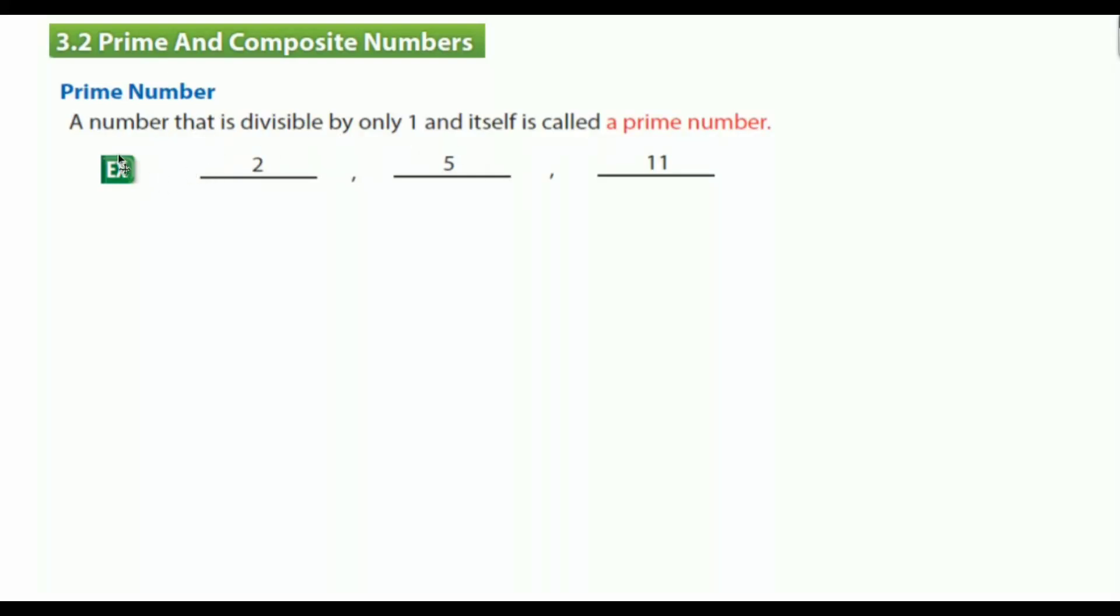First, let's talk about prime numbers. A number that is divisible by only 1 and itself is called a prime number. We have examples to understand this well. Let's look at 2, 5, and 11. How many factors does 2 have?